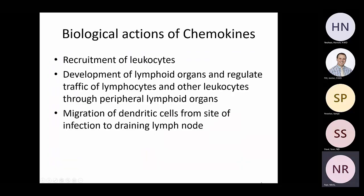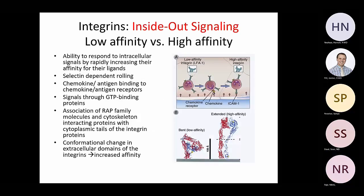Chemokines help in recruitment of leukocytes, development of lymphoid organs, regulation of lymphocyte traffic to peripheral lymphoid organs, and migration of dendritic cells from sites of infection to draining lymph nodes. Selectins provide low-affinity binding; integrins provide high-affinity binding — and for that, chemokines are critical.